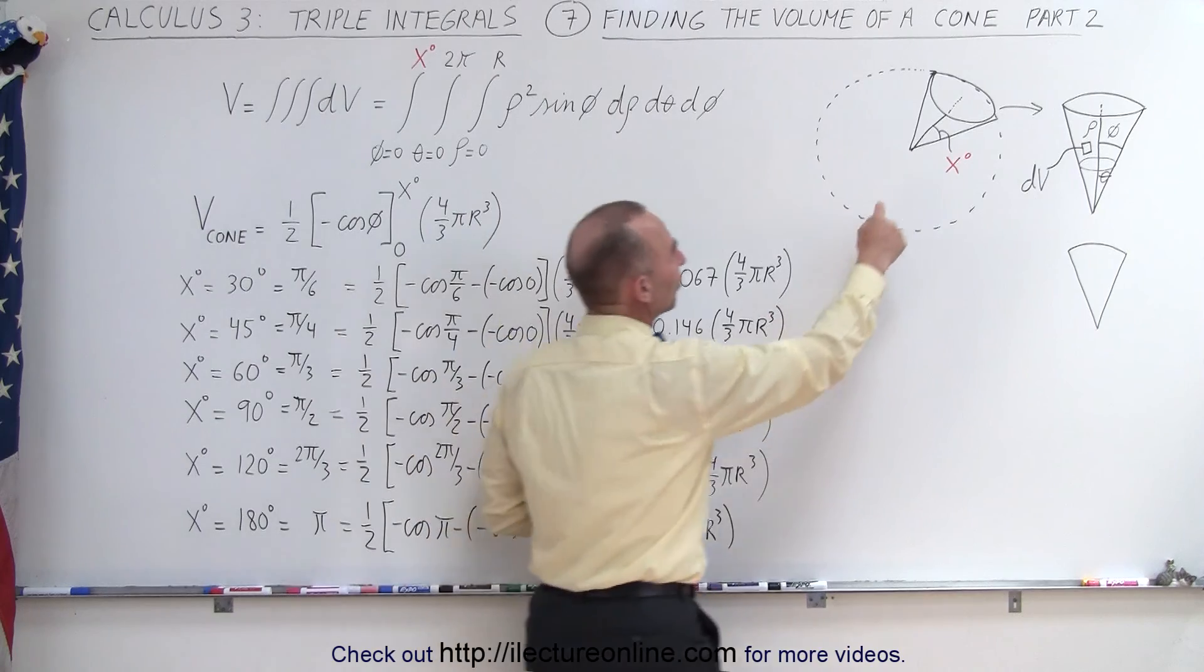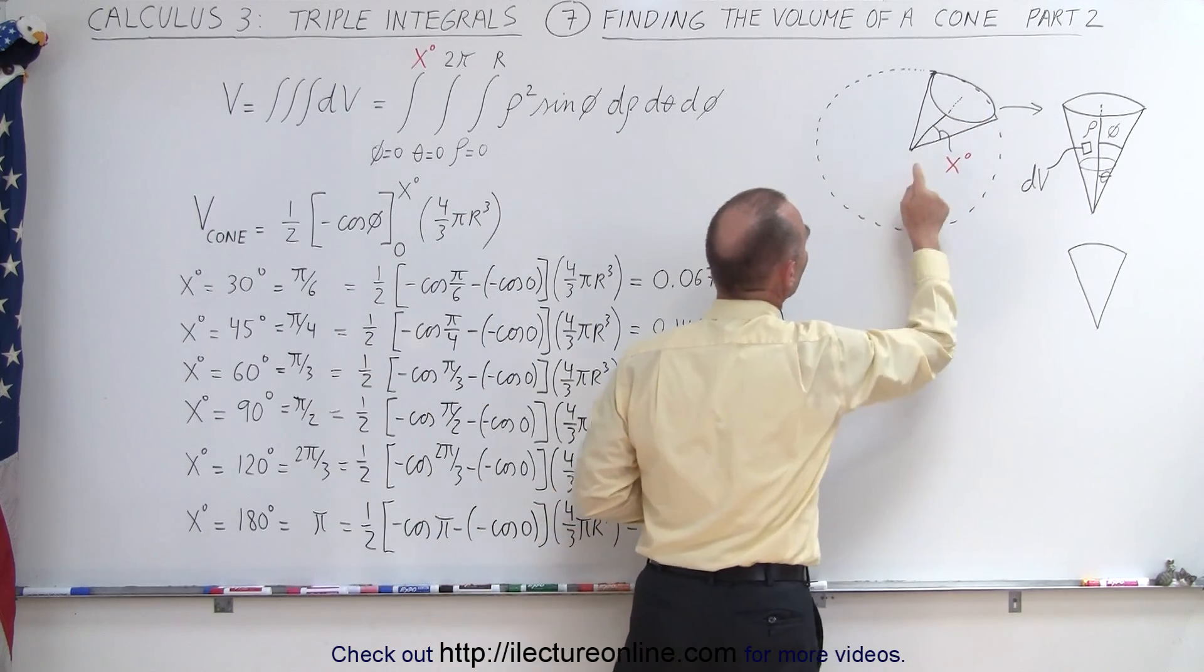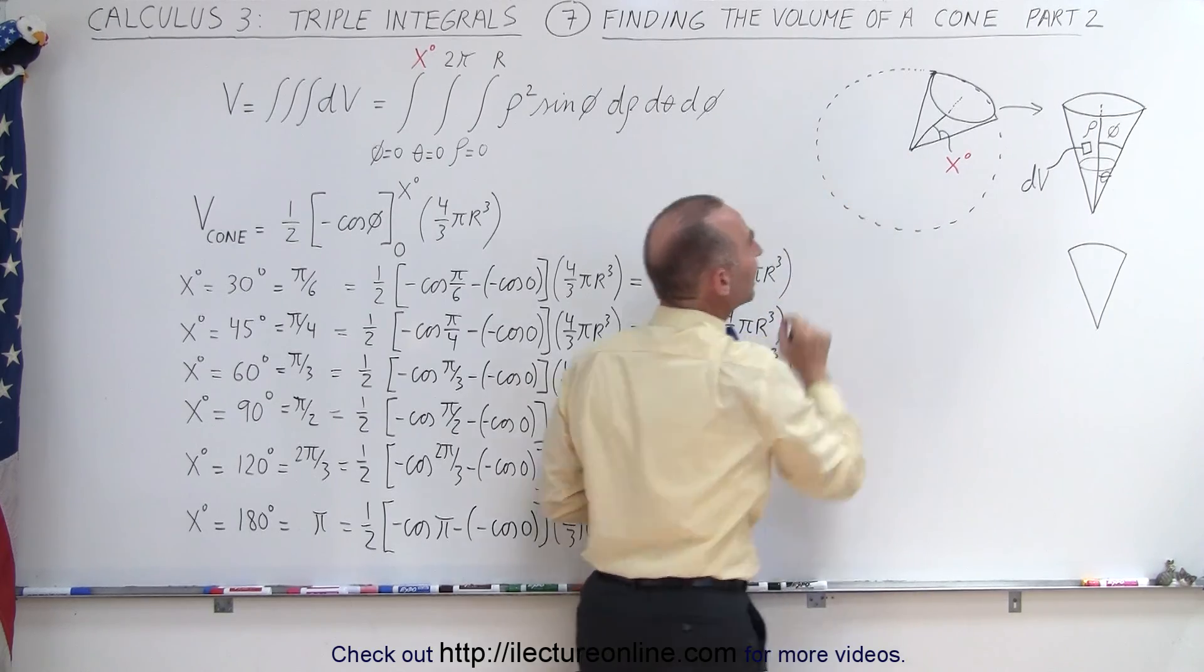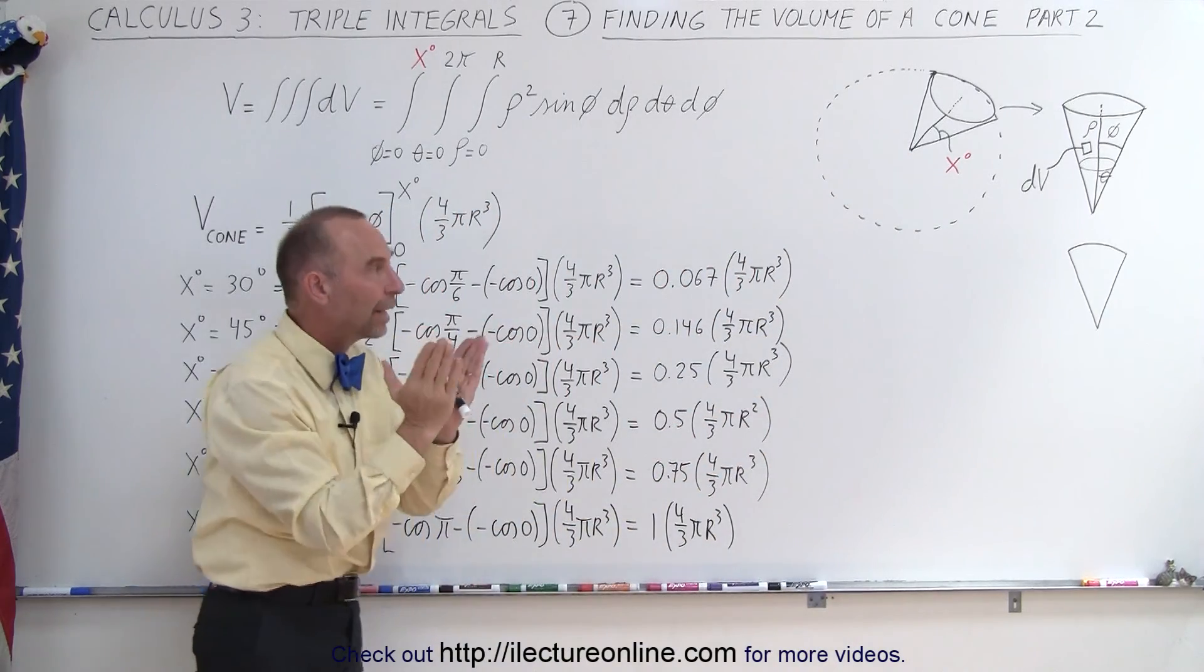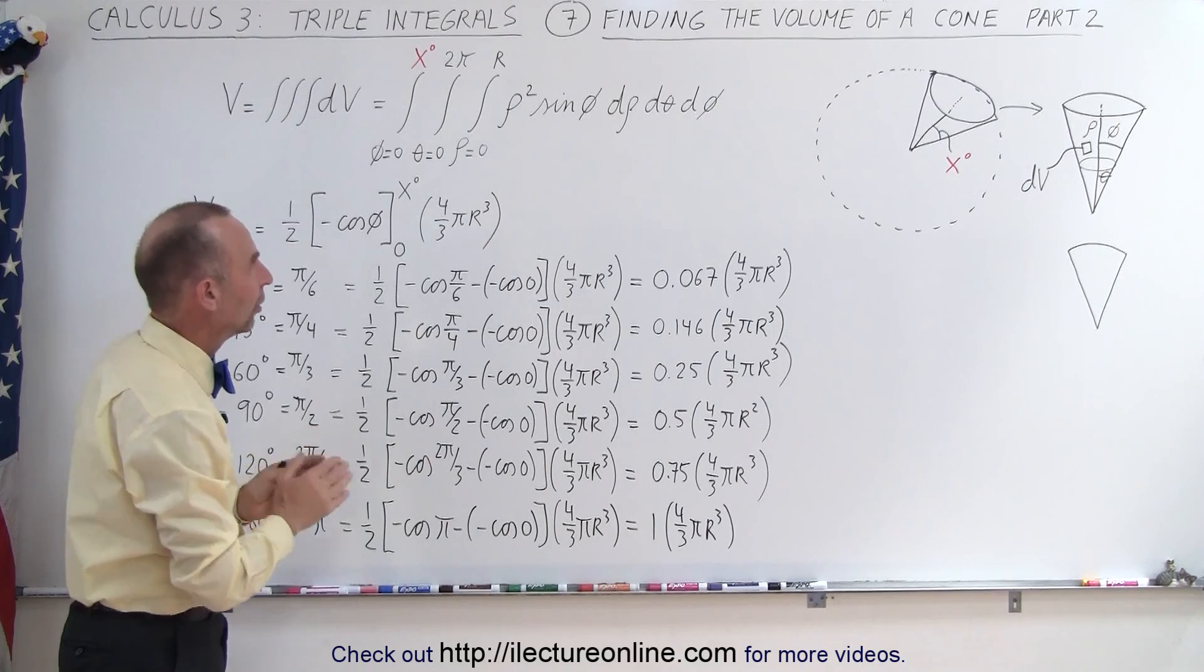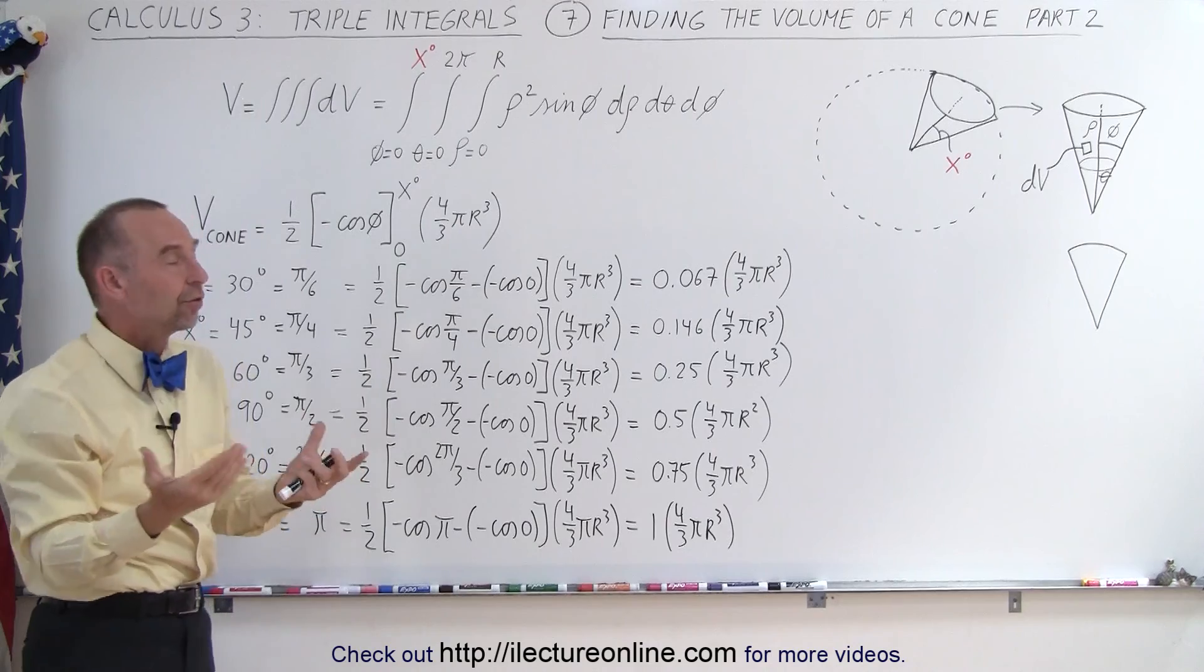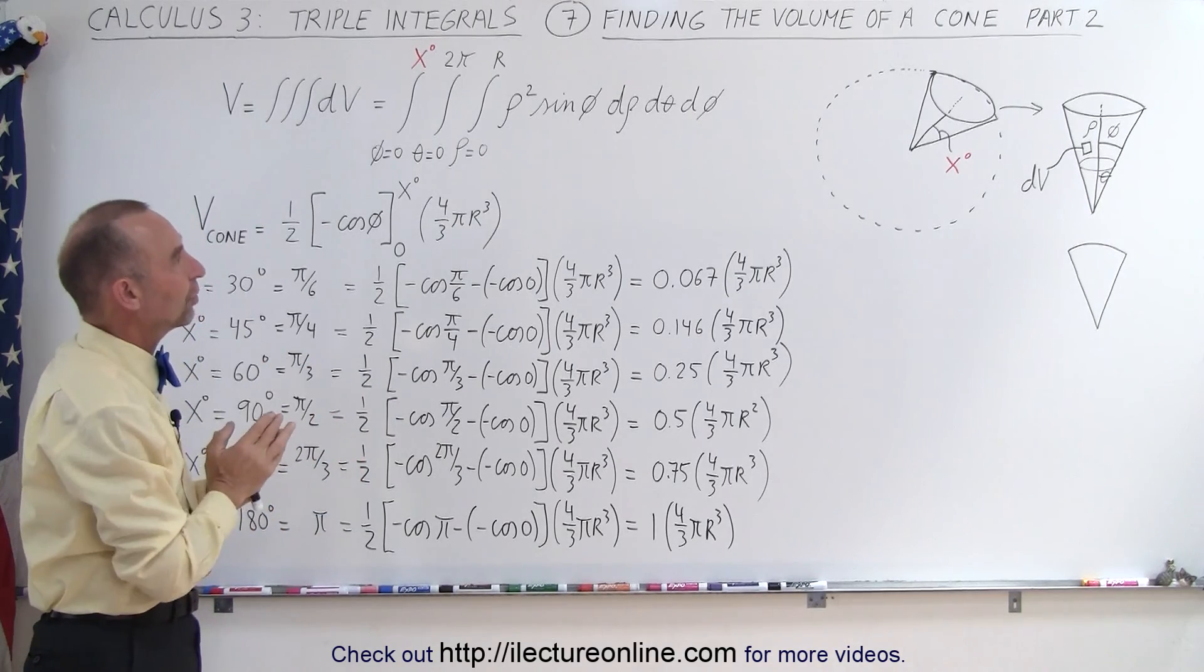We're still integrating from zero to the radius of the sphere and we're still integrating around the entire 360 degrees of the cone shape regardless of how narrow or how wide the cone is. So these first two integrals remain the same whether we're integrating over the entire sphere or only a portion of the sphere.